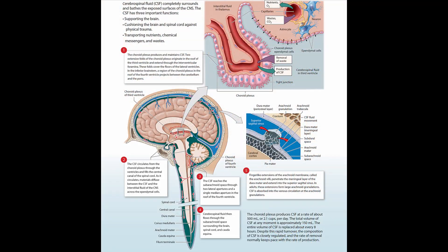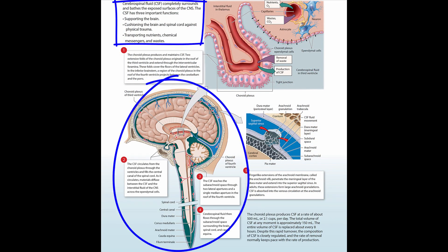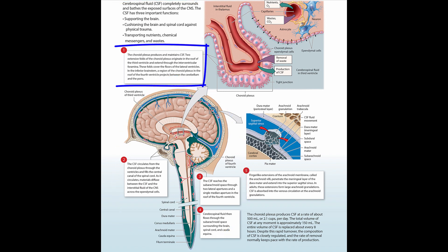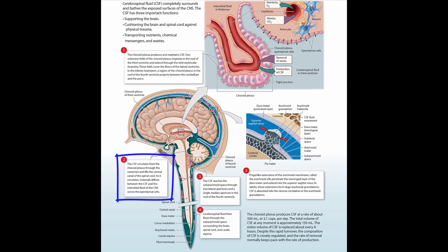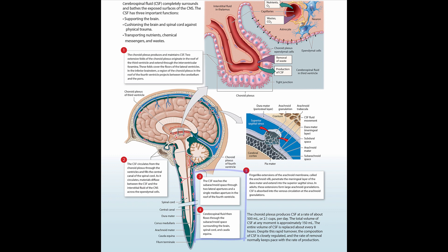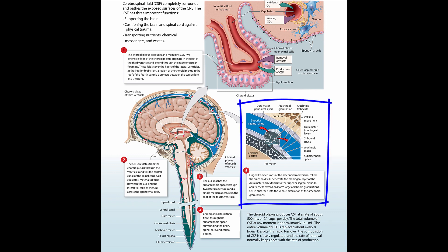In summary, CSF is a fluid that bathes and supports the cells of the central nervous system. It is formed within the choroid plexuses, flows through the ventricles of the brain, the central canal of the spinal cord, and the entire subarachnoid space. It is reabsorbed into the circulatory system at the superior sagittal sinus via arachnoid granulations.